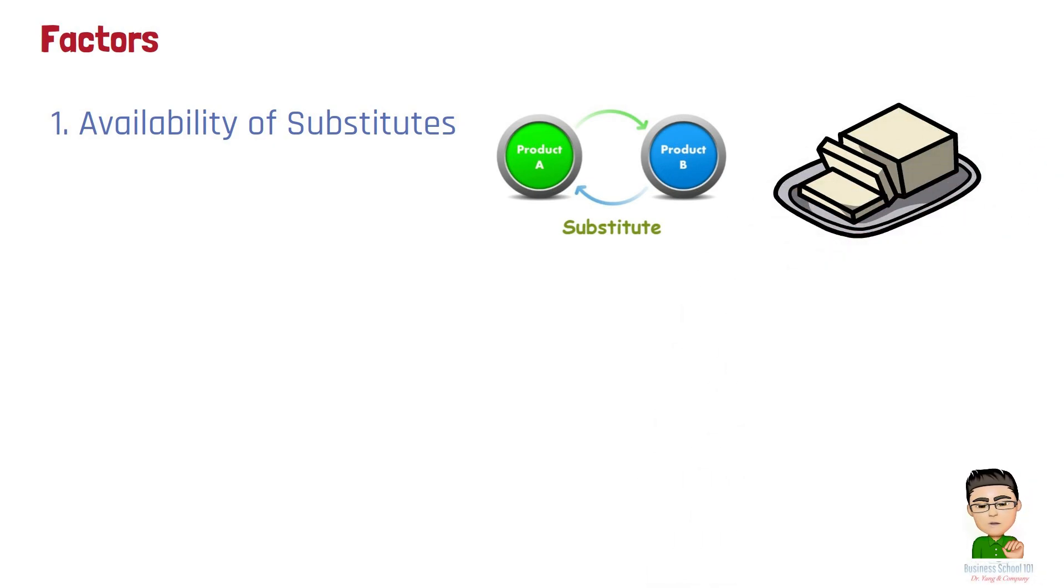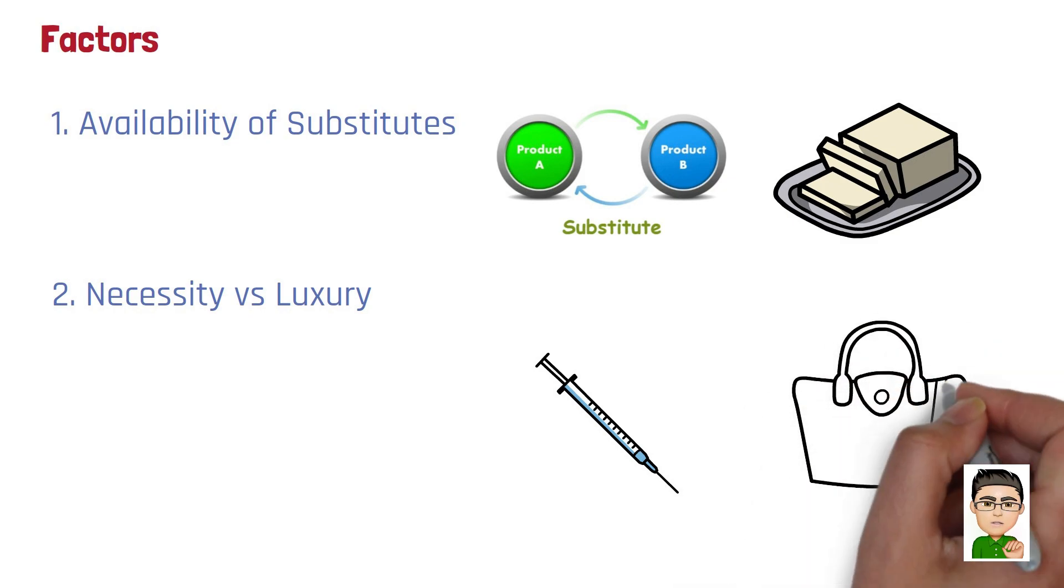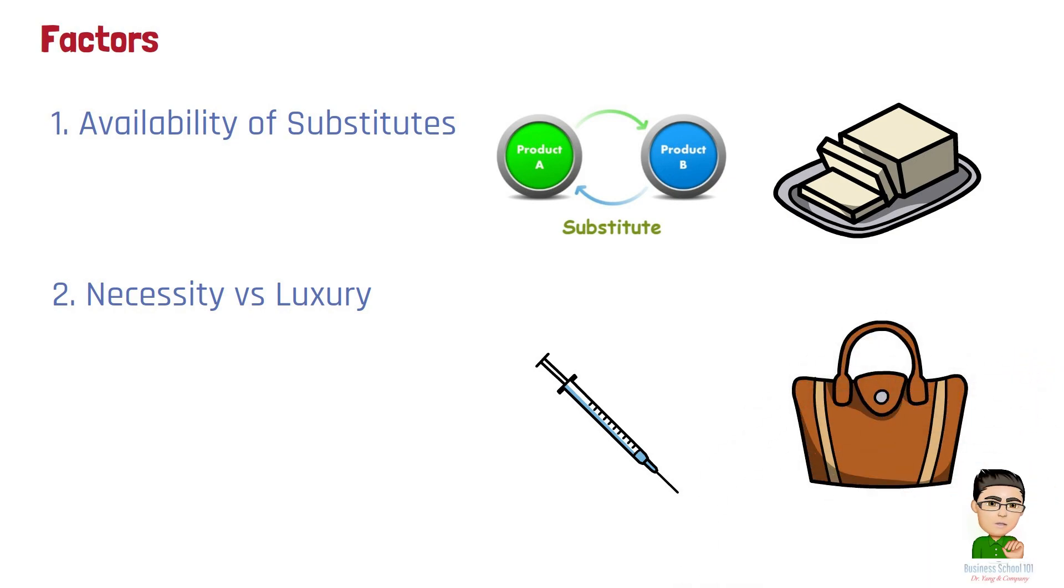Number 2: Necessity vs. Luxury. Necessities tend to have inelastic demand, while luxury goods tend to have more elastic demand. For example, insulin for diabetics is a necessity, so its demand is inelastic. In contrast, luxury items like designer handbags have more elastic demand because people can choose to forego these purchases if prices rise.